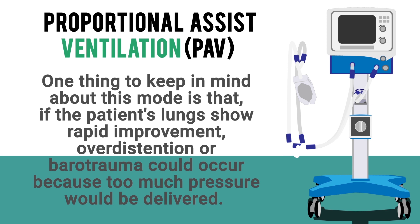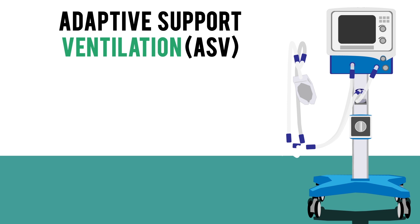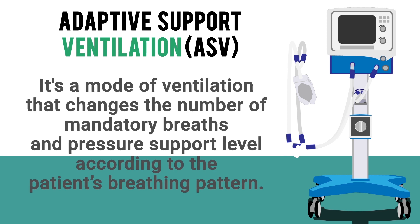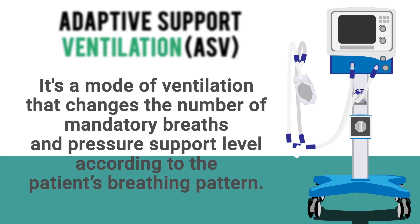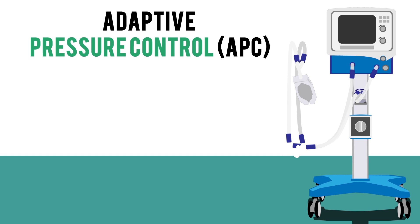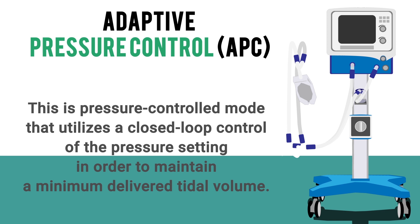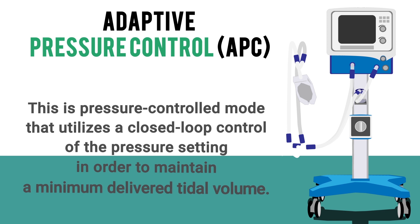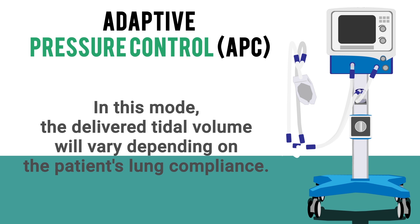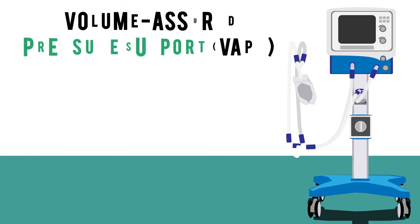ASV, or Adaptive Support Ventilation, is a mode that changes the number of mandatory breaths and pressure support level according to the patient's breathing pattern. APC, or Adaptive Pressure Control, is a pressure-controlled mode that utilizes a closed-loop control of the pressure setting in order to maintain a minimum delivered tidal volume. In this mode, the delivered tidal volume will vary depending on the patient's lung compliance.